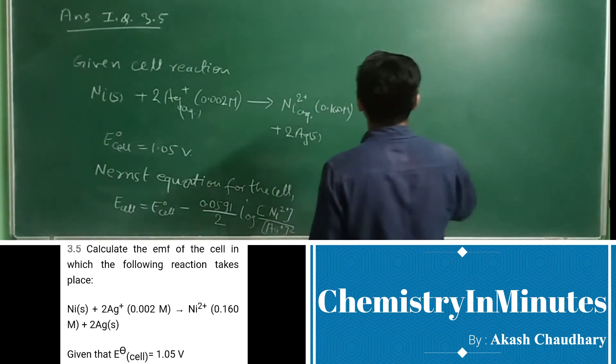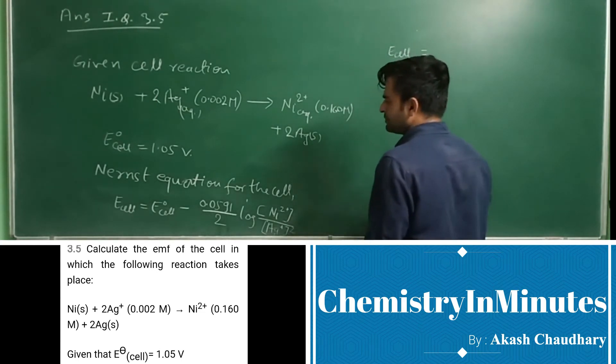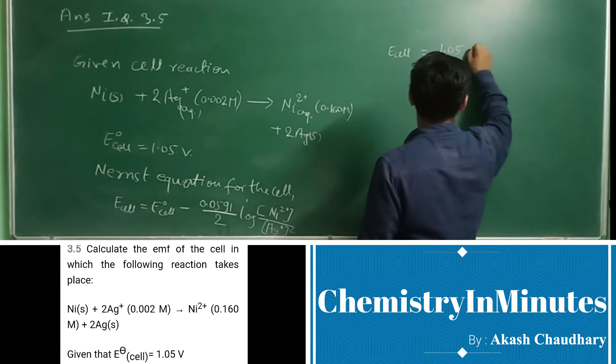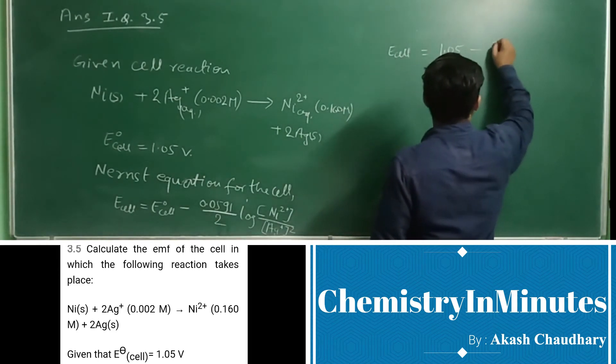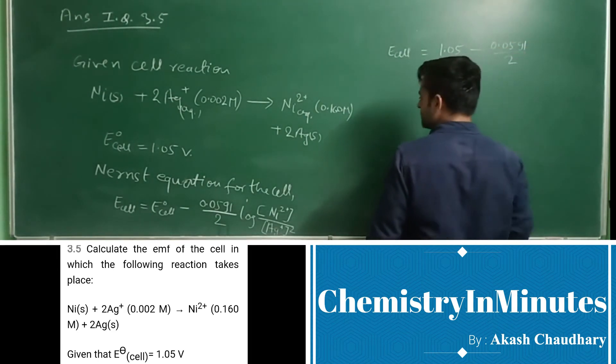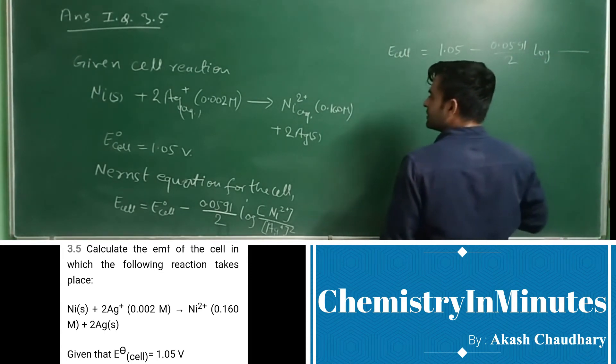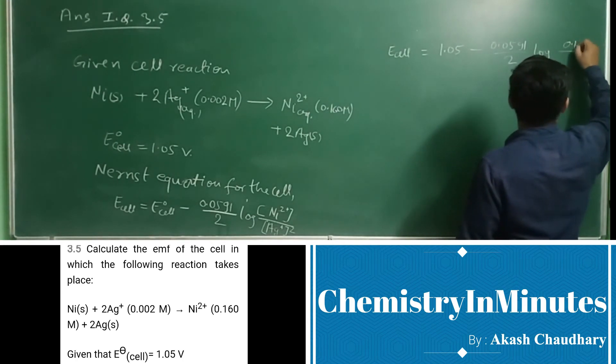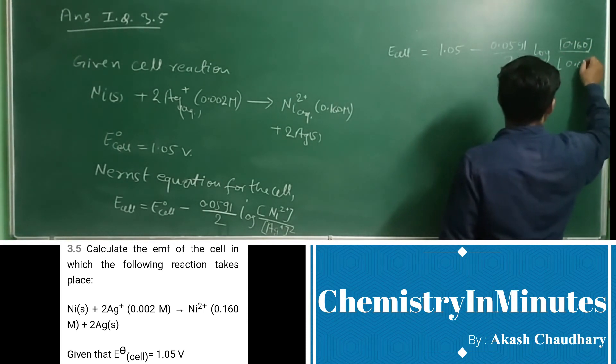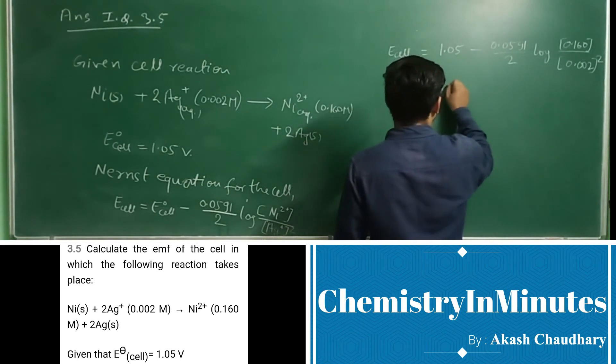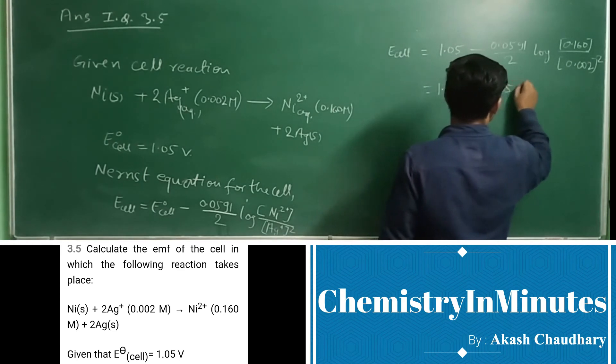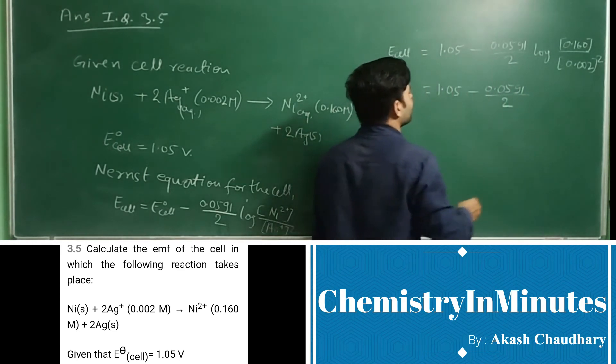We will put the values in the equation. Ecell = 1.05 V minus 0.0591/2 log [Ni²⁺ concentration 0.16 upon (Ag+)² concentration 0.002 squared]. 1.05 minus 0.0591/2 log...